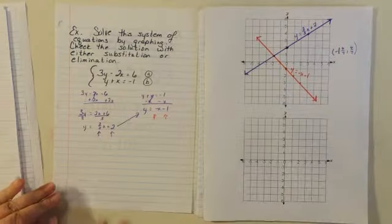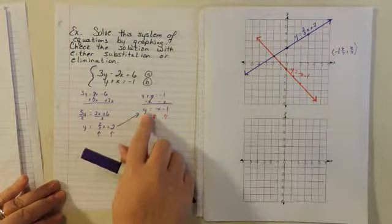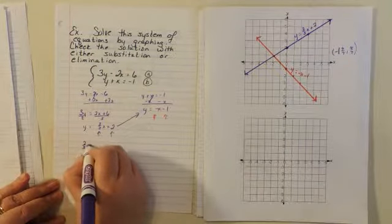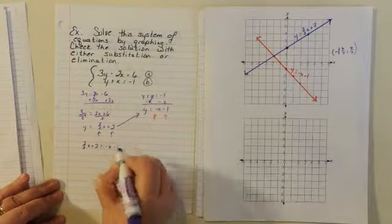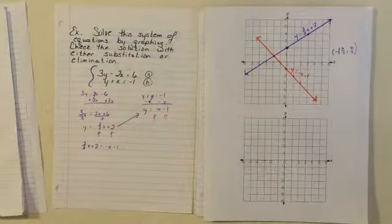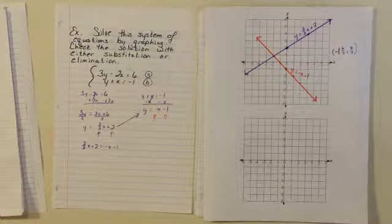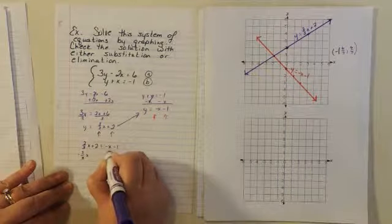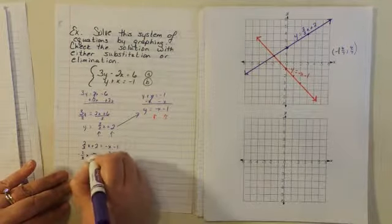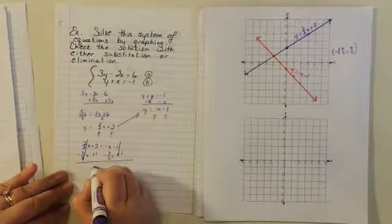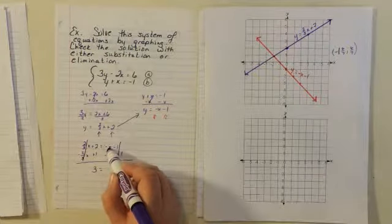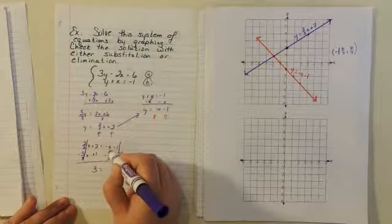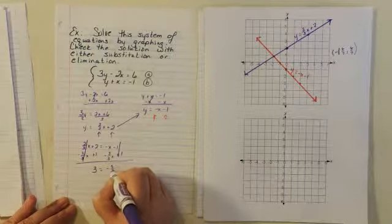We can test that by checking with substitution. We already have two equations solved for y. So if y equals 2/3 x plus 2 and y equals negative x minus 1, we can set these two equal to each other. So we have 2/3 x plus 2 equals negative x minus 1 — because if y equals y, then these two expressions must also equal each other. Moving the 2/3 x to one side and the constant to the other, we get 3 equals negative 3/3 x minus 2/3 x, which is negative 5/3 x.